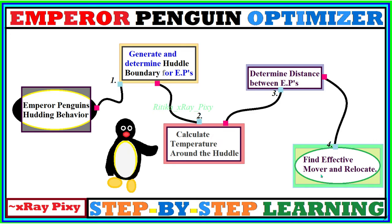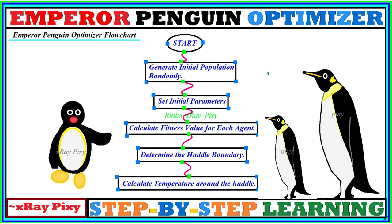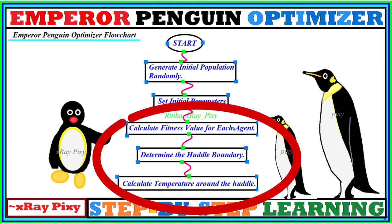Here we have the flowchart for the Emperor Penguin Optimizer. First, we start with the initial population — we randomly generate the initial population of emperor penguins in the search space. Then we select the initial parameters for this algorithm. After that, we calculate the fitness value for each emperor penguin in the current population, and then determine the huddle boundary.